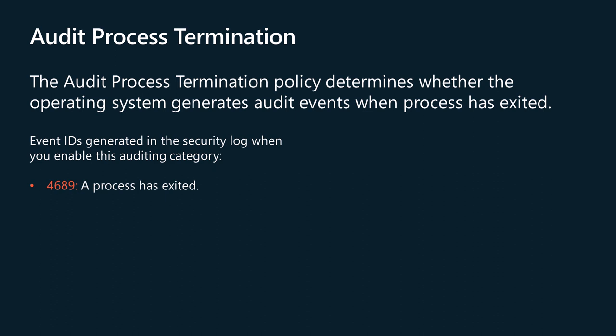This subcategory is typically not as important as the Audit Process Creation subcategory. Using this subcategory you can, for example, get information about how long a process was run. If you have a list of critical processes that run on some computers, you can enable this subcategory to monitor for termination of those critical processes.